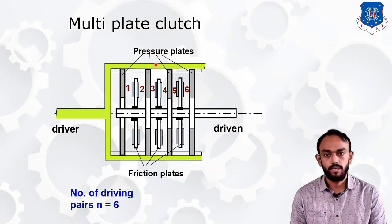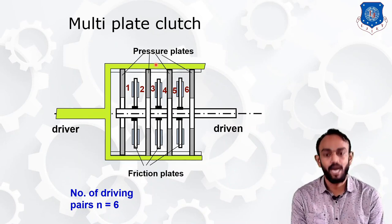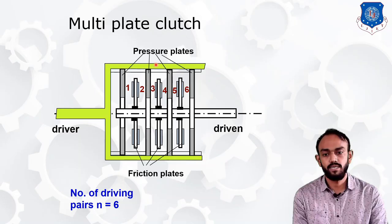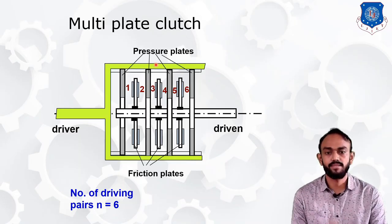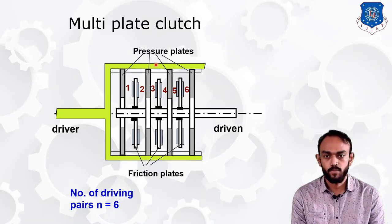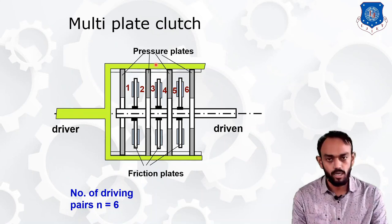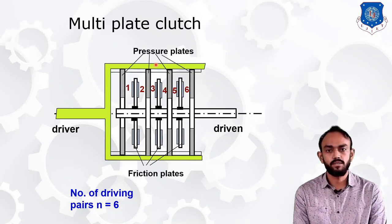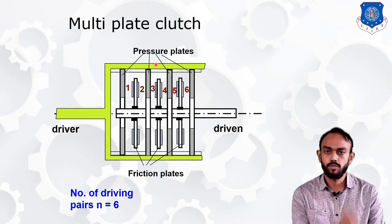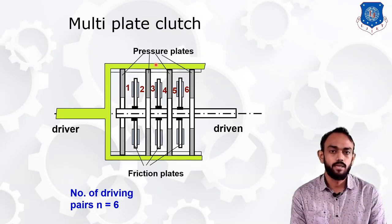If we want to transmit more torque, we use a multi-plate clutch, which has a higher friction surface area. You can see here the number of driving pairs is six. The multi-plate clutch is used to transmit higher torque. The working and construction are similar to the single plate clutch — only the number of plates is higher.